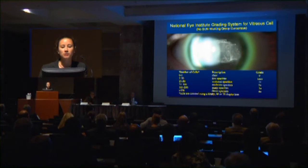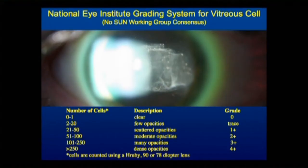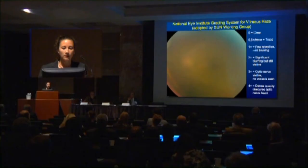There is no consensus about how to grade vitreous cell, and so some people use the National Eye Institute grading system — that's where I trained, so that's what I use. It becomes quite difficult to count cells in the vitreous, and so many people do a bit more of a gestalt when they grade vitreous cell.